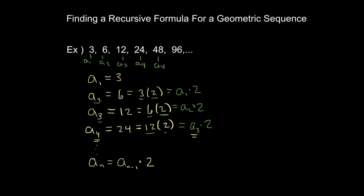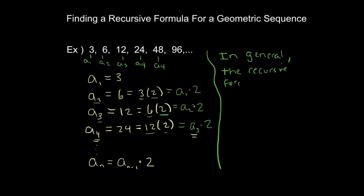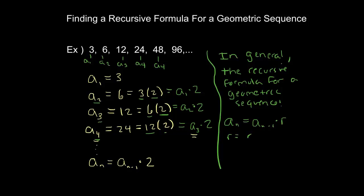That is what the recursive formula for a geometric sequence looks like. In general, the recursive formula for a geometric sequence has this structure: any term is the one before it times r, where r is your common ratio. And once again, in order to make this whole thing work, we need our first term to be given.